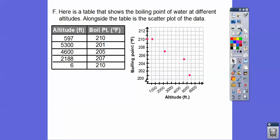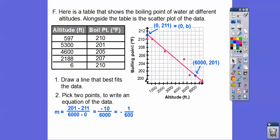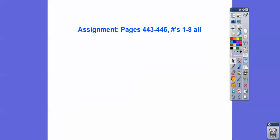Here's a table showing the boiling point of water at different altitudes, alongside a scatter plot of that data. For example, 6, 210 and about 597, so almost 600. There are five points on that scatter plot. Draw a line that best fits the data, then pick two points and write an equation. A good point to pick is 0, 211 — that gives us b directly. Combined with 6, 201, we get a slope of negative 1 over 600. So our equation is y equals negative one-sixth-hundredth x plus 211.